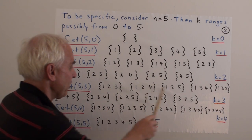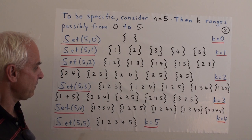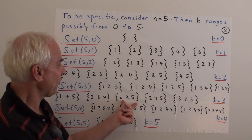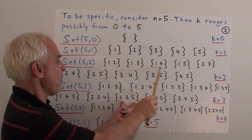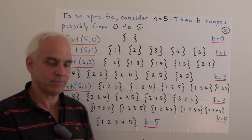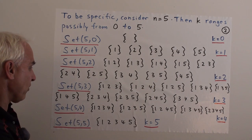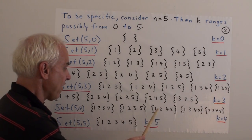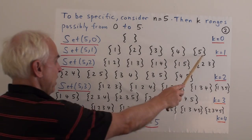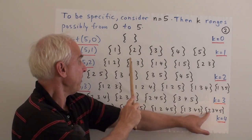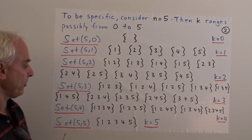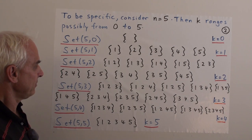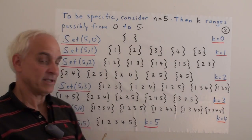There are also 10 three-sets, matching the 10 two-sets. There's a correspondence: for any three-set, say {2,3,5}, there's an associated two-set — just the other two numbers, {1,4}. So there's a natural pairing and symmetry. Similarly, k equals four gives five four-sets — {1,2,3,4}, {1,2,3,5}, {1,2,4,5}, {1,3,4,5}, {2,3,4,5} — corresponding to the five one-sets. And k equals five gives the full set {1,2,3,4,5}, corresponding to the empty set when k equals zero.